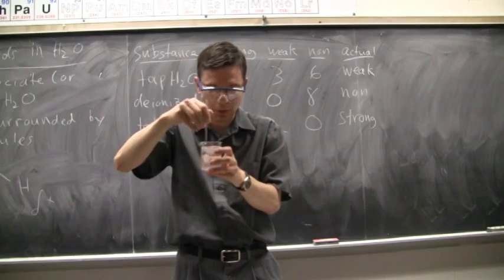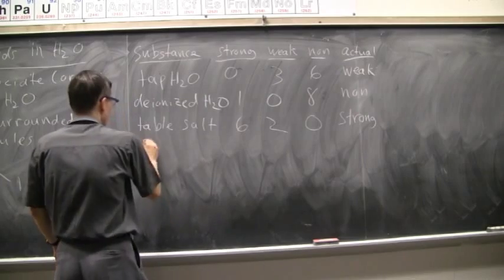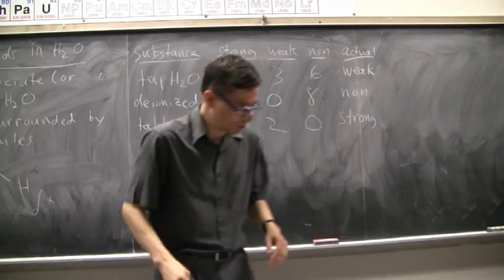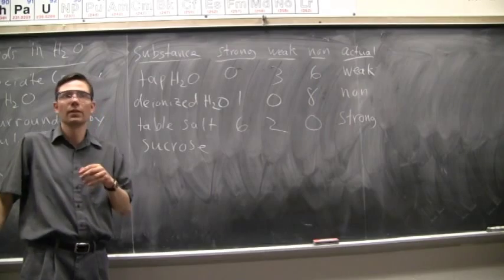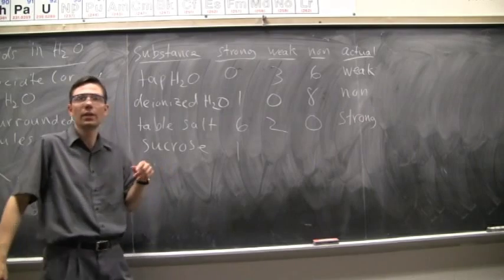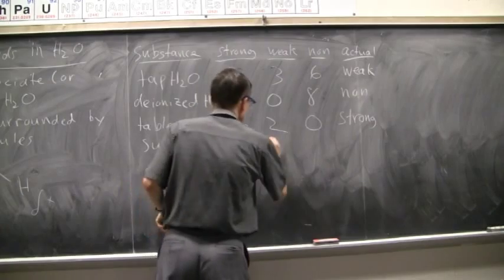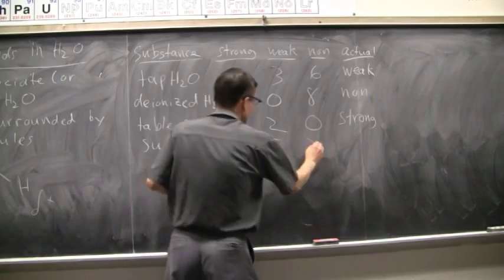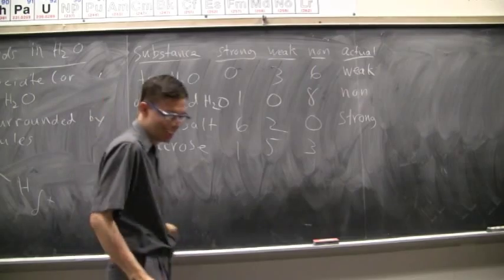All right. And this beaker here is going to be some sucrose. So, we have sucrose. And let's see what our voting is here. Strong electrolyte. All right. One. Okay. Weak. One, two, three, four, five. None. One, two, three. Now, the person that disappeared from the last time has now reappeared. Apparently. So, we have nine again.